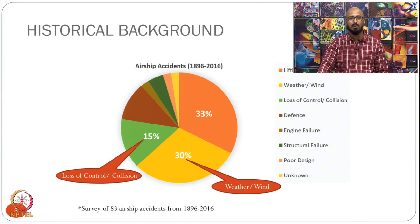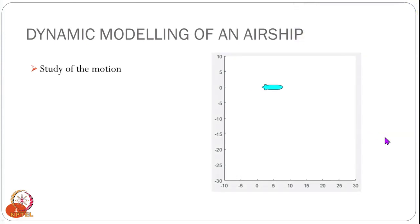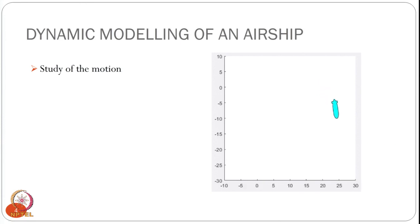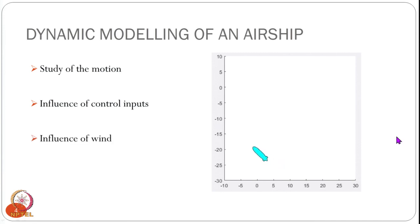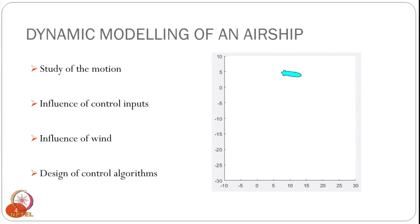In this talk we are going to try to understand why it is so difficult to control an airship and decode a little bit of the motion of an airship. When we say we are doing dynamic modeling, dynamics is the study of motion — we study how the airship moves when we give certain control inputs such as thrust or control surface deflection, or study the influence of wind. We also use dynamics modeling in the design of control algorithms for autonomous airships.